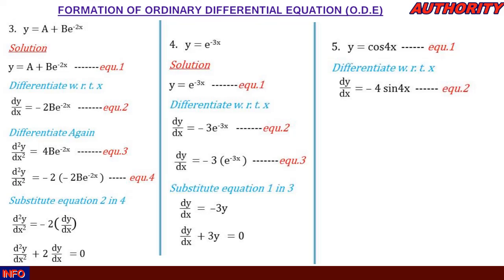To differentiate cos(4x) using the chain rule: let t = 4x, so we have cos t. Differentiate cos t with respect to t to get −sin t, and differentiate t with respect to x to get 4. Combining: dy/dx = −4·sin(4x).